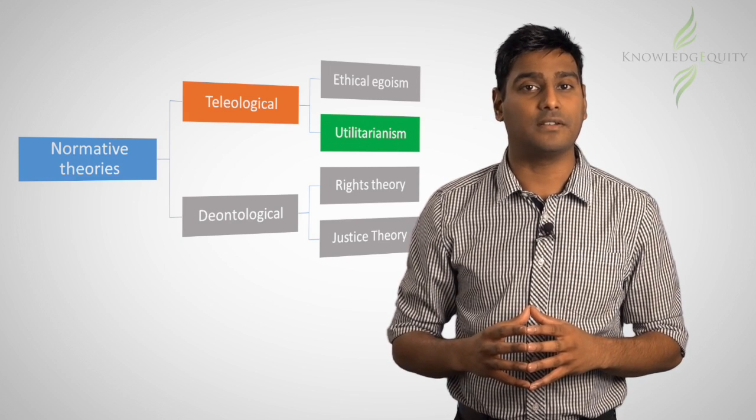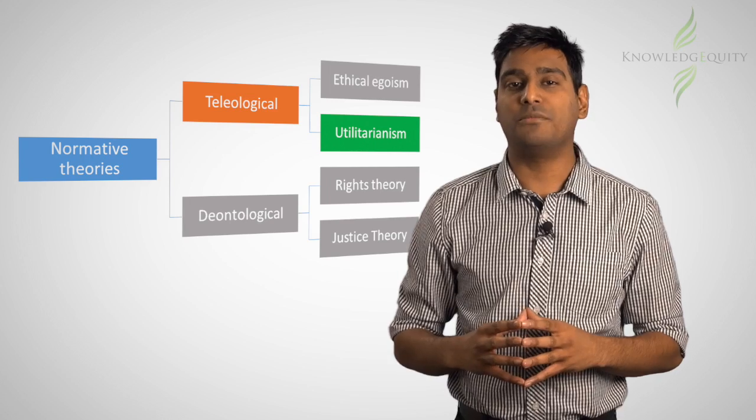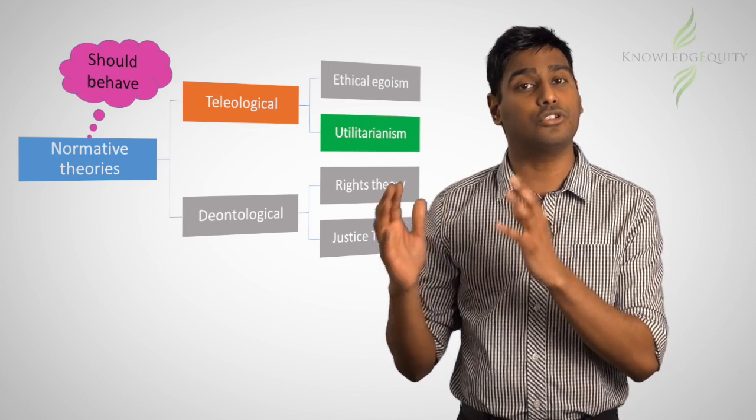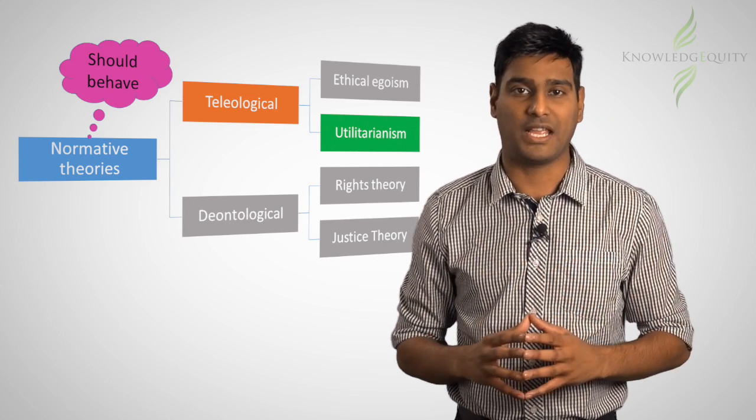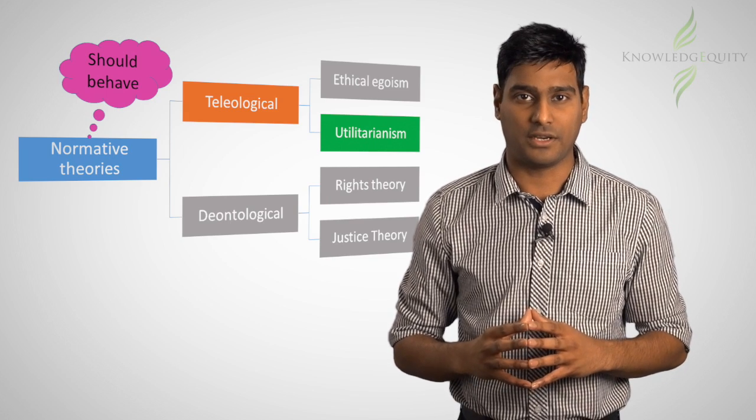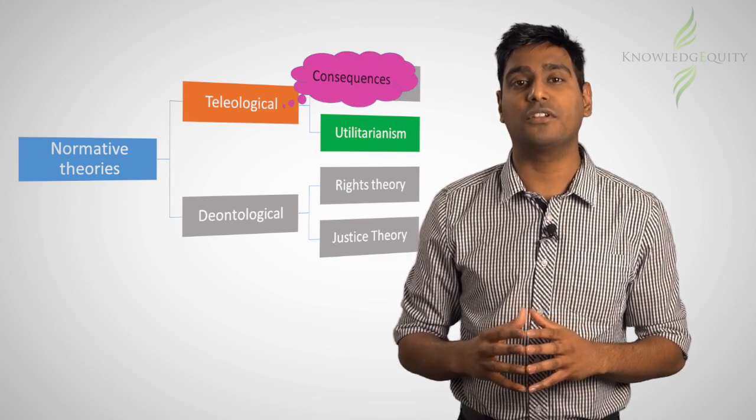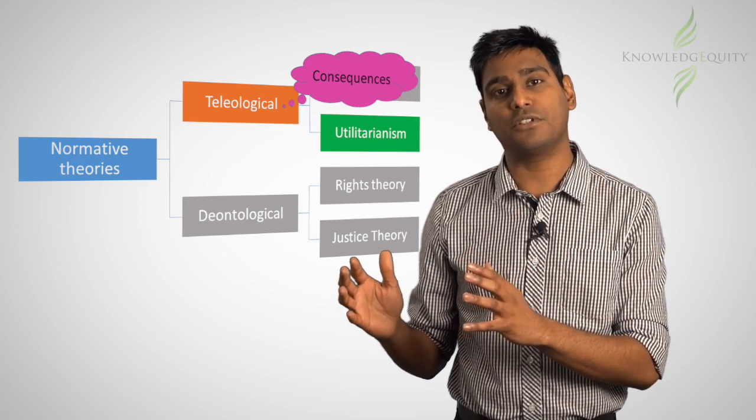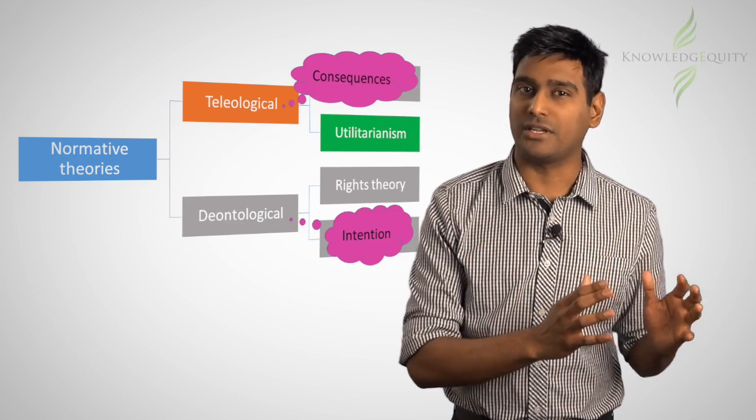We know that utilitarianism is a normative theory, which means that it focuses on how people should or ought to behave. We also know that it is a branch of teleological theory. This means that it focuses on the consequences and outcomes of a decision rather than on intention.